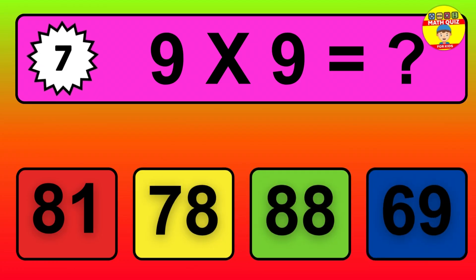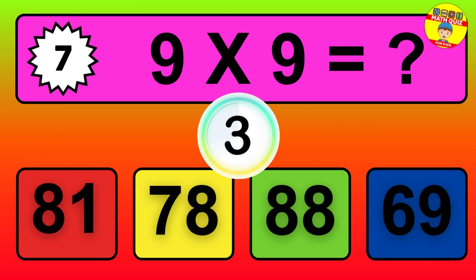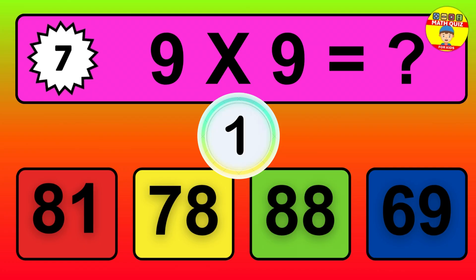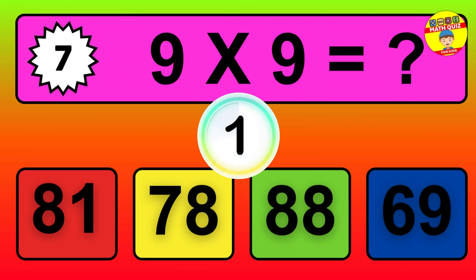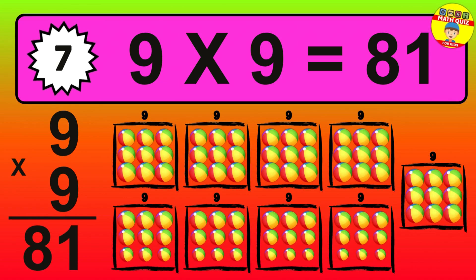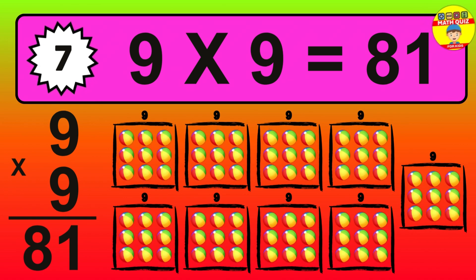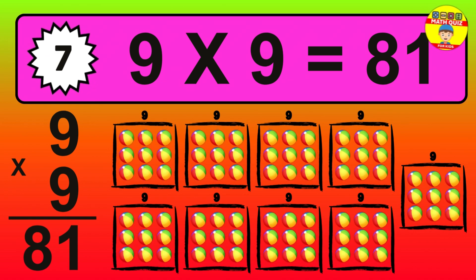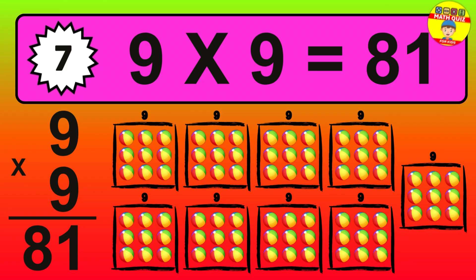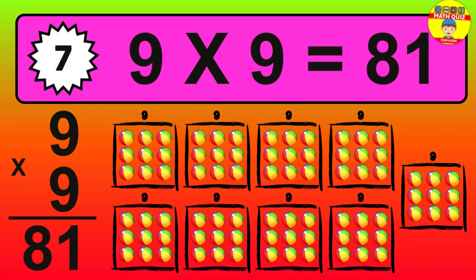Question 7. 9 times 9 equals what? The answer is 9 times 9 is 81. To calculate, we have 9 groups with 9 balls each one. So, how many balls do we have? 81 balls.